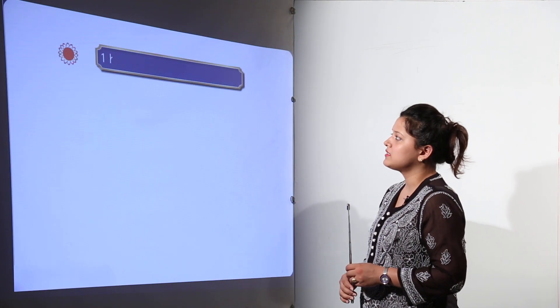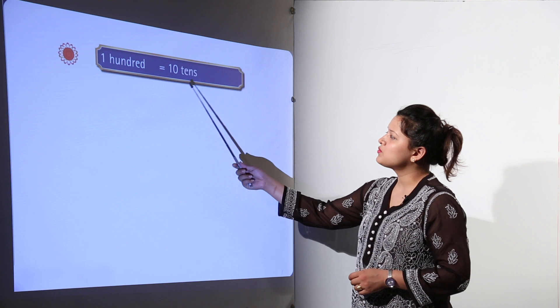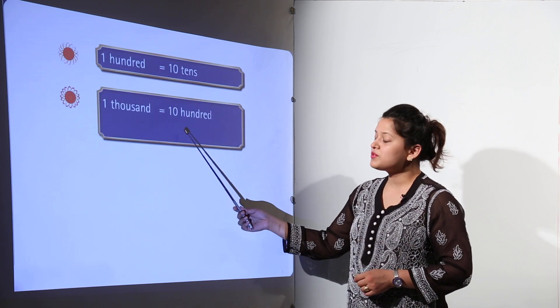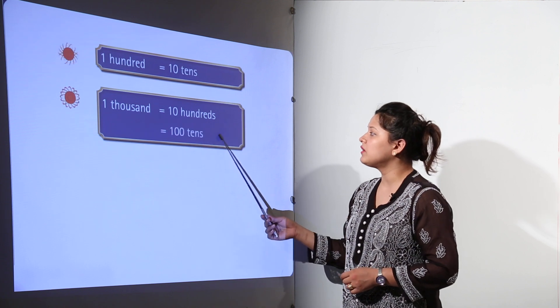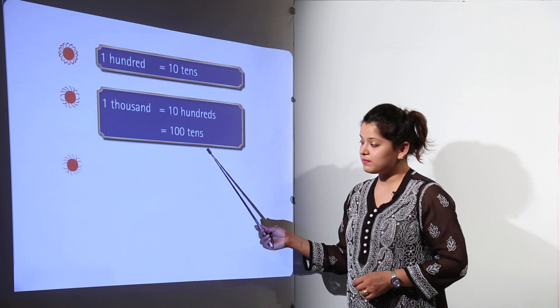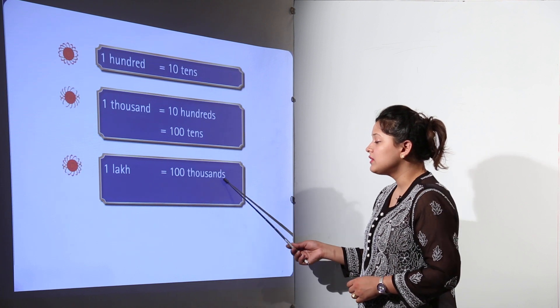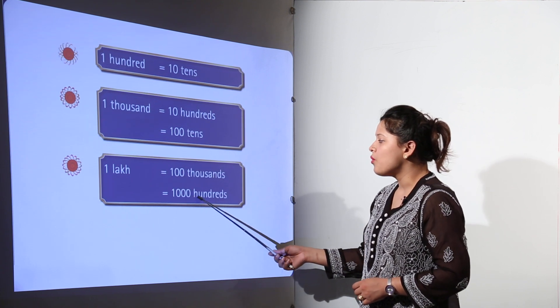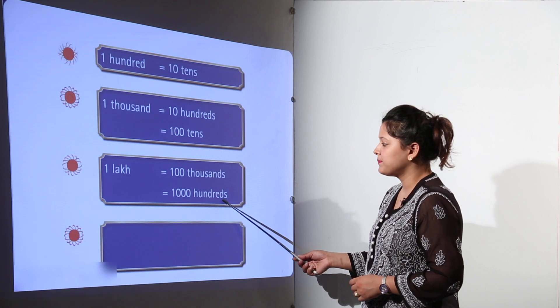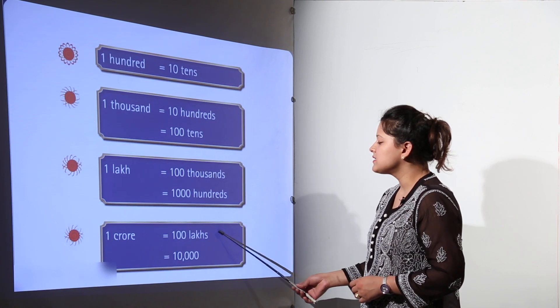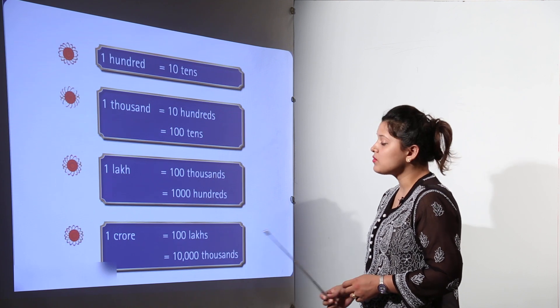Now large numbers in practice. We know that one hundred is equal to ten tens. One thousand can be written equal to ten hundreds or hundred tens. One lakh can be written as hundred thousands and also one thousand hundreds. One crore can be written as hundred lakhs and also ten thousand thousands.